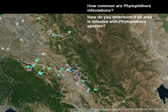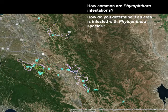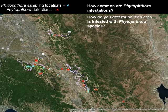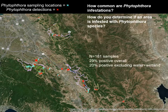...we were involved in this study with the Santa Clara Valley Habitat Agency and sampled areas in the habitat conservation plan reserve system. All these Xs are our sample locations and the red Xs show where we actually detected Phytophthora. We had 181 samples, of which 29% were positive overall.